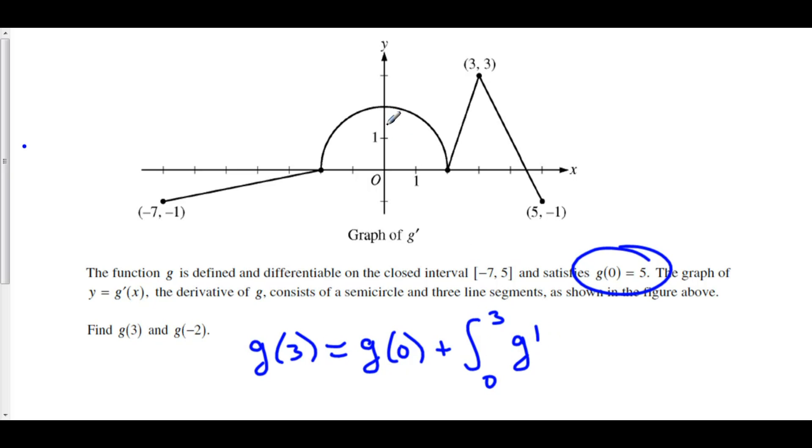We are going from 0 to 3, so we have a quarter circle of radius 2.